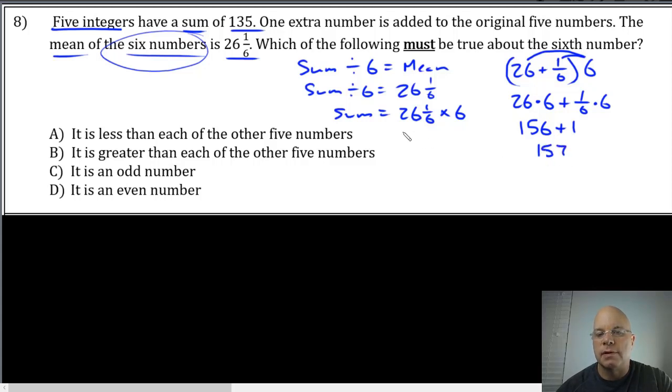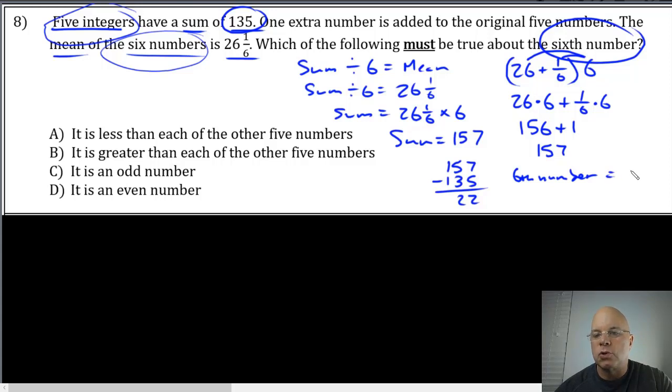So our sum of the six numbers is 157. The sum of the five integers is 135, so we can find the sixth number by subtracting 135 from 157. That gives you a difference of 22. Once we know the sixth number is 22, it's going to be fairly easy to determine which answer choice must be true.